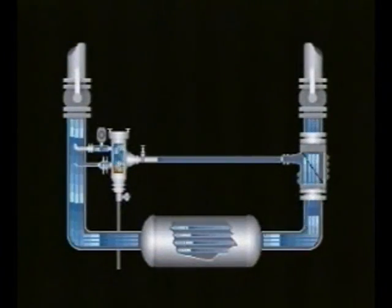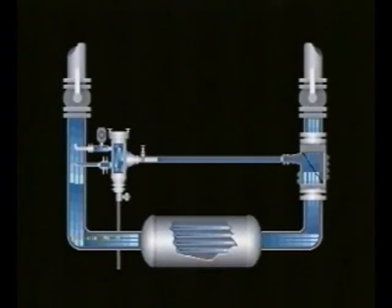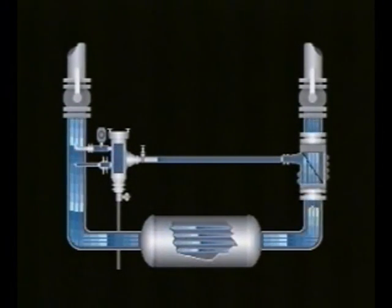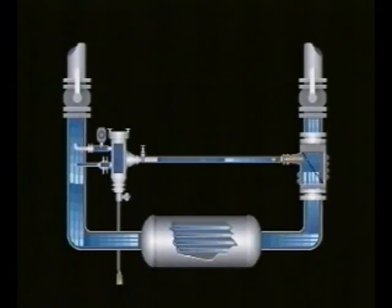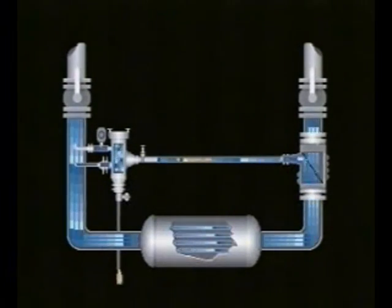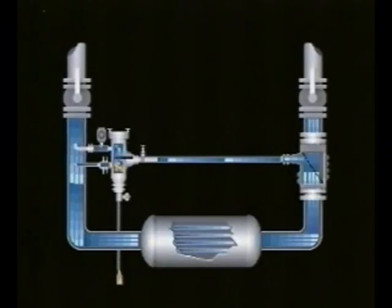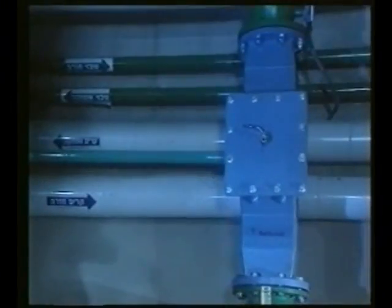The system is a fully automated hydromechanical process recycling sponge balls with special properties through the condenser's tubes at preset intervals. Let's see how it works. The system has three main elements: an injector, a ball trap, and a computerized controller.